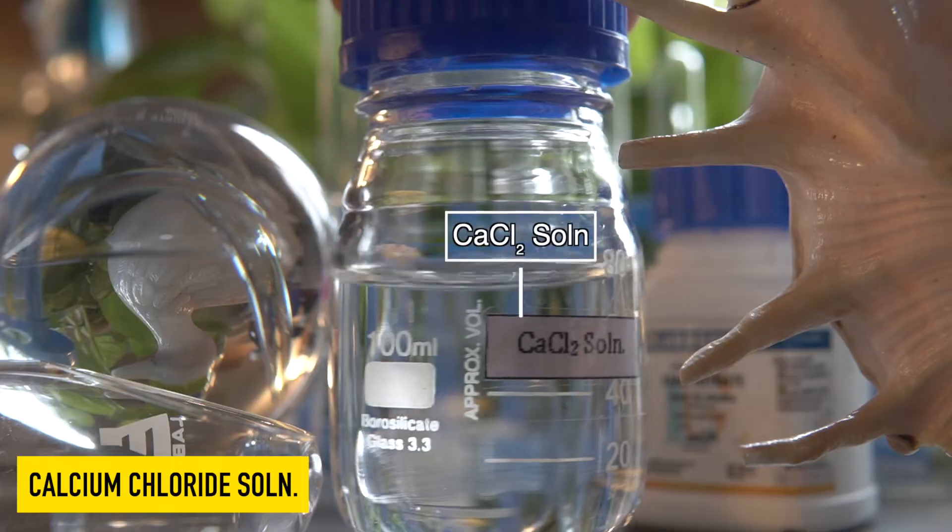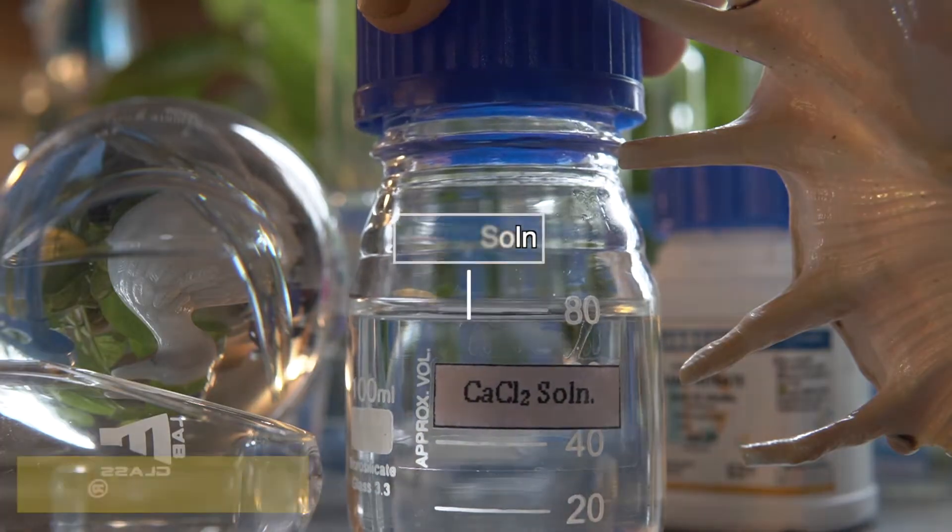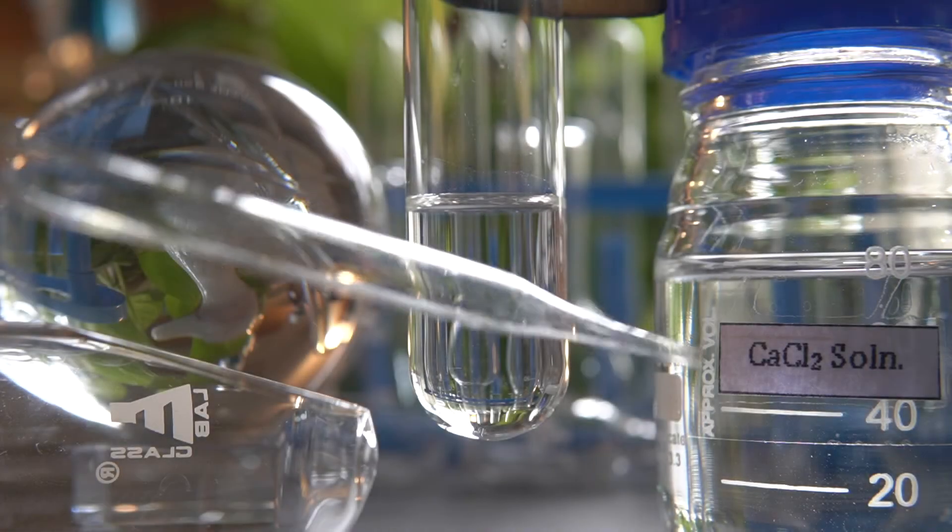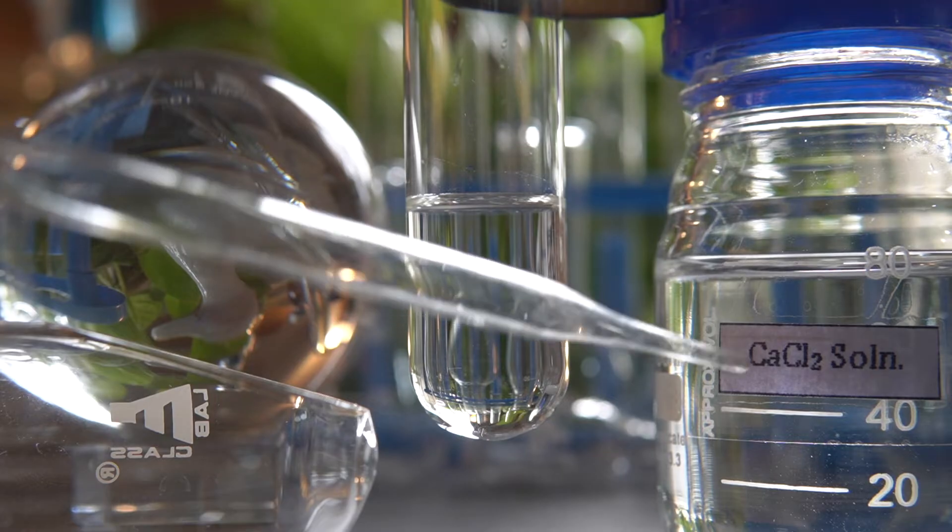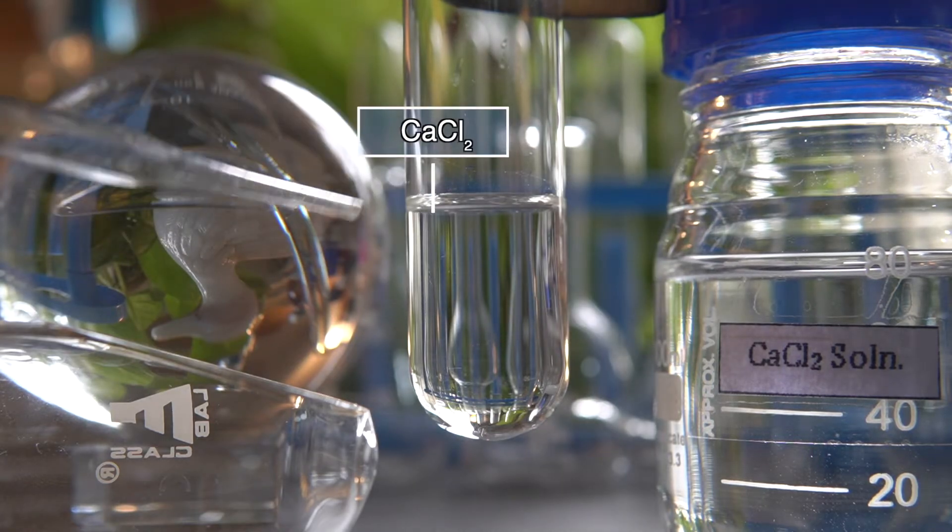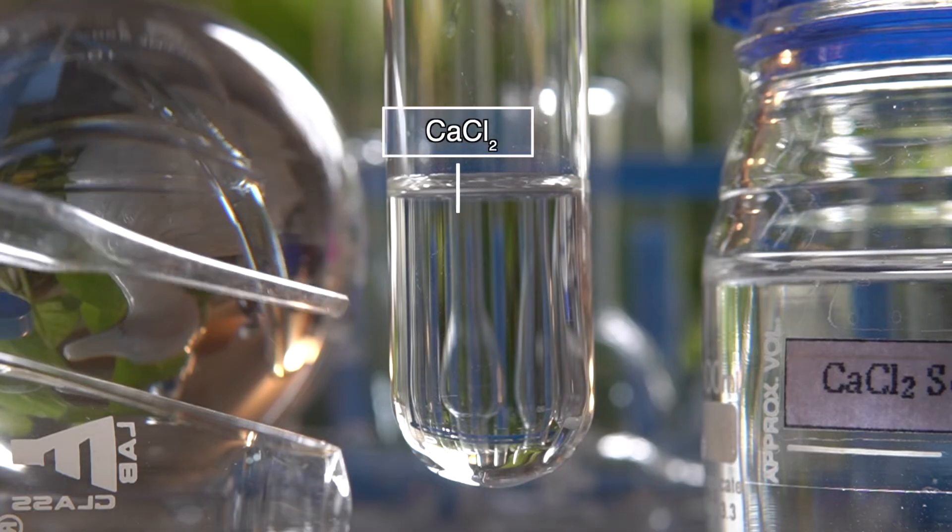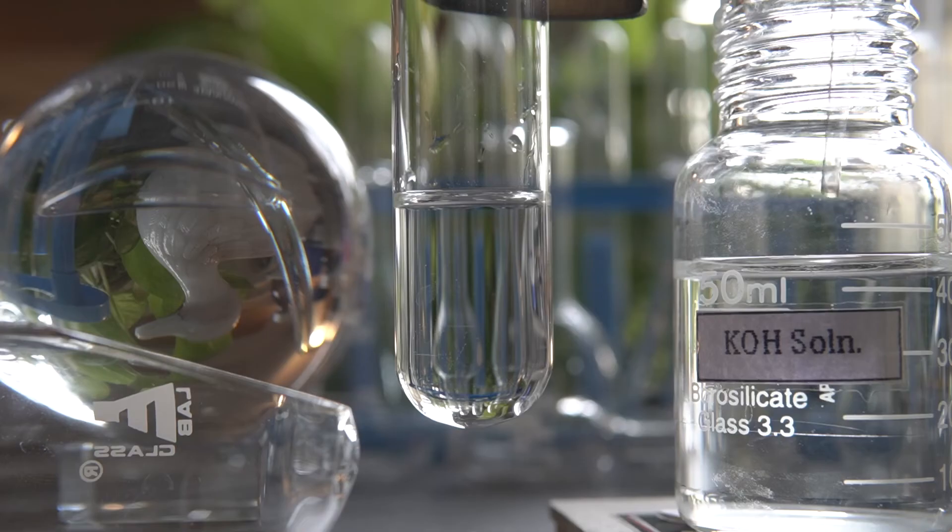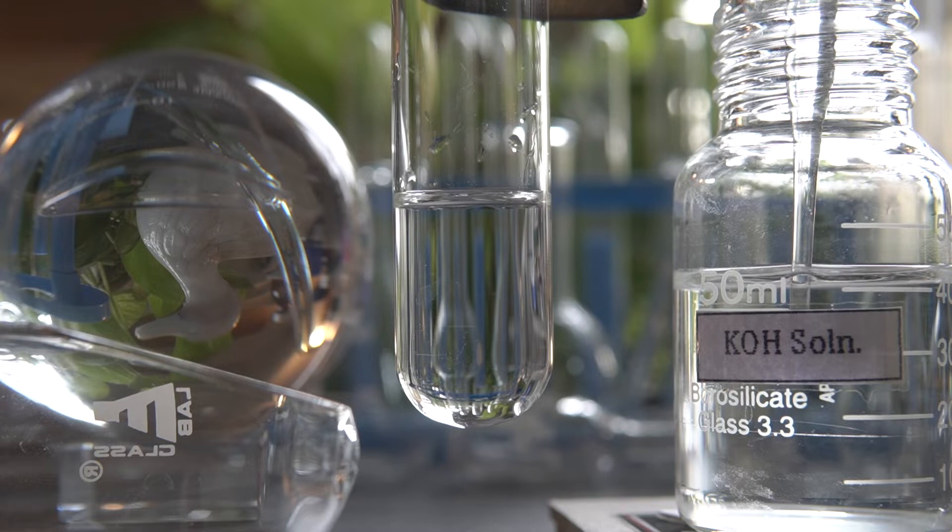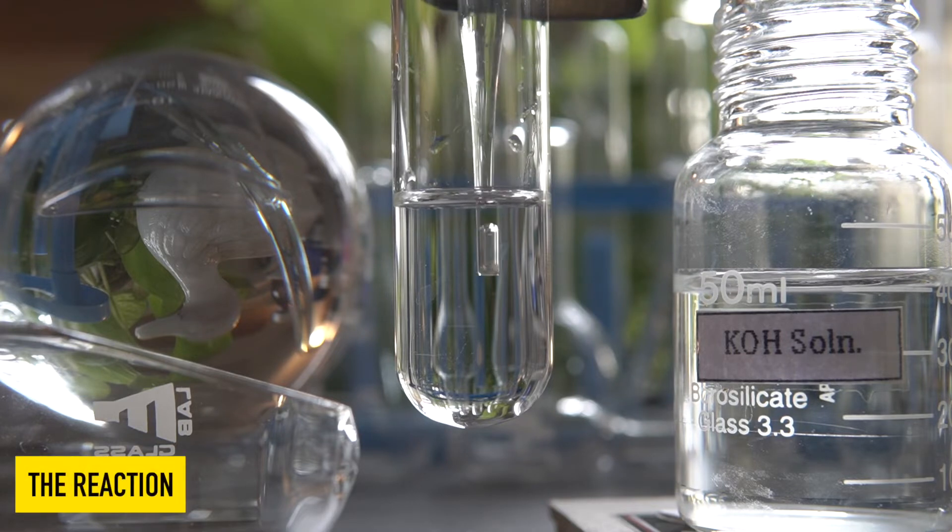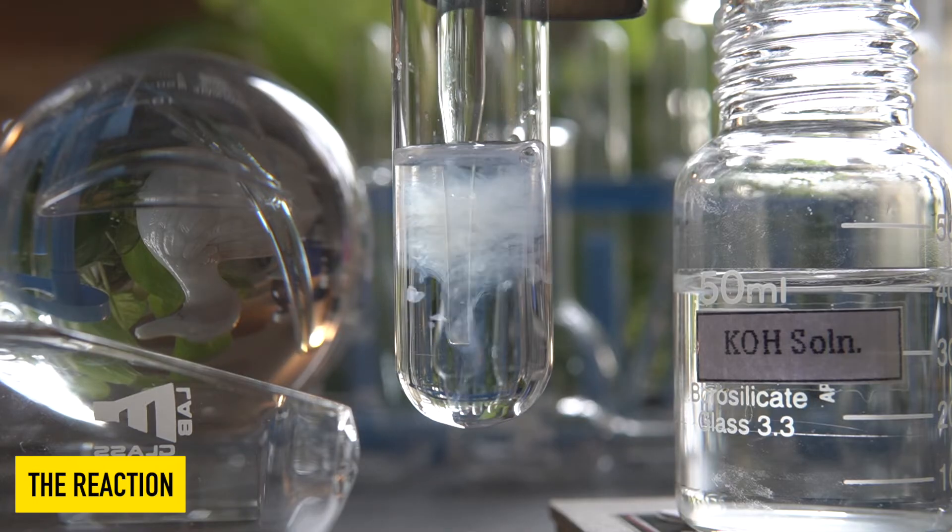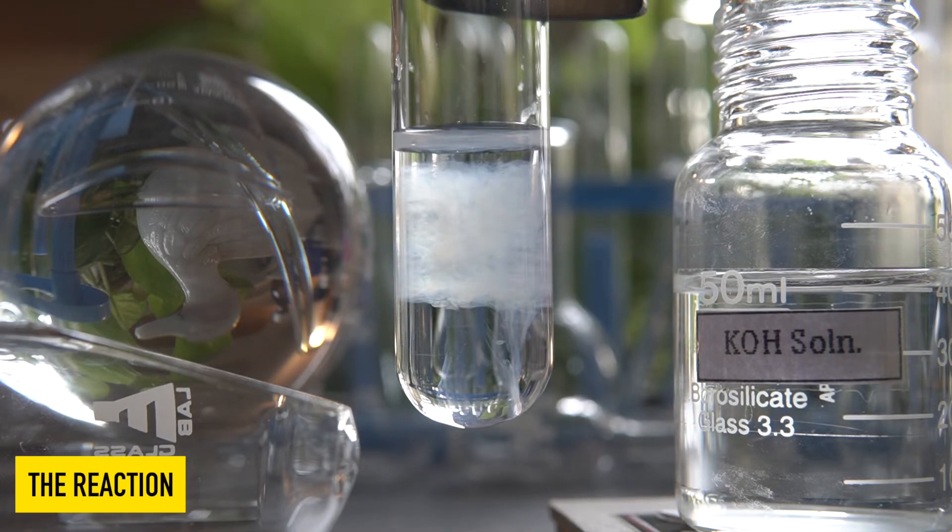Now to initiate the reaction, we will take some amount of the calcium chloride solution into this test tube. Add KOH or potassium hydroxide solution into the calcium chloride or CaCl2 solution slowly and observe the effect.